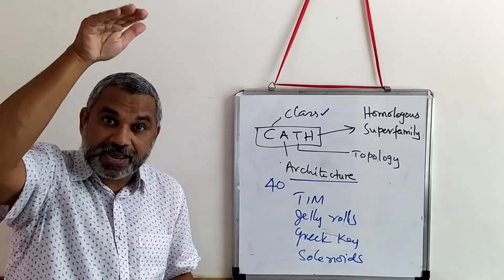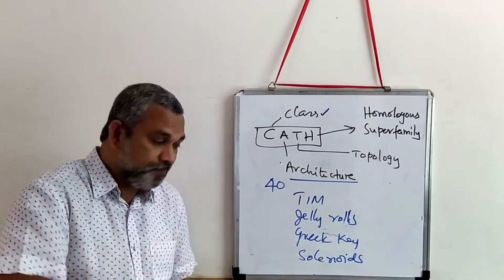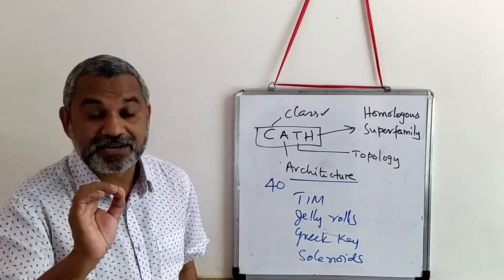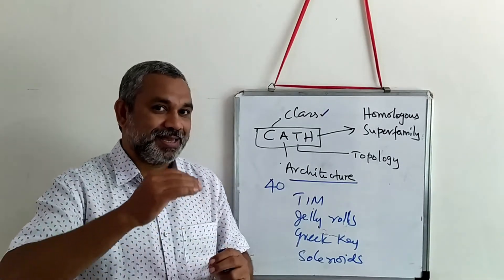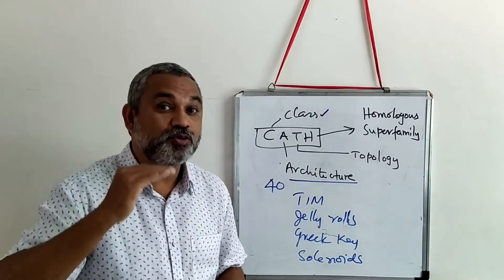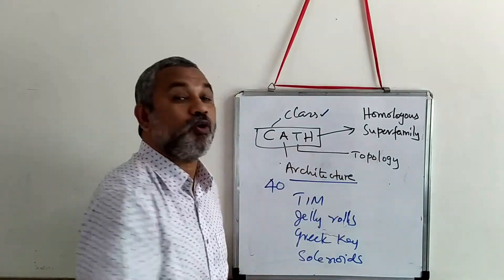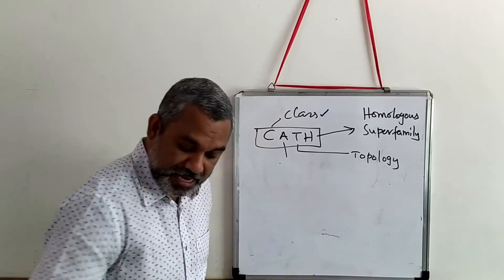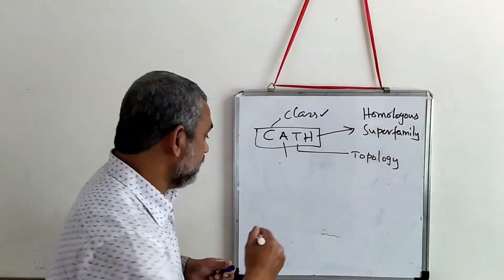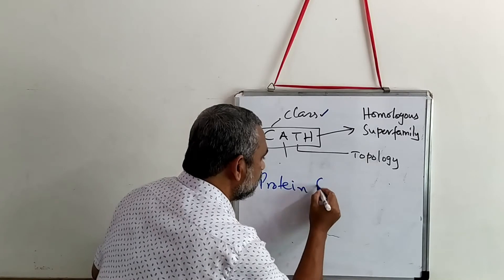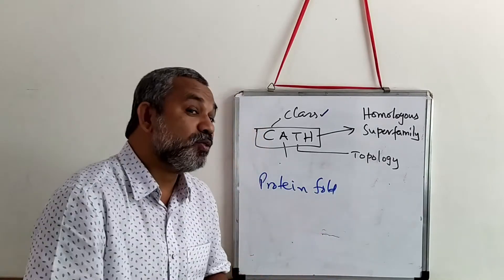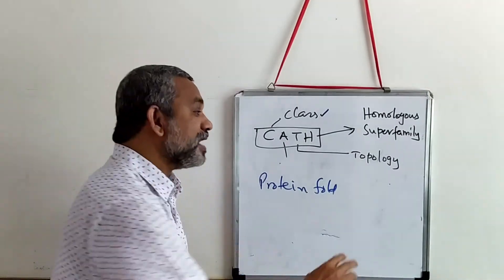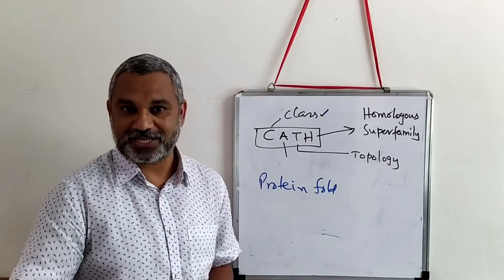Similarly, you will see that in the hierarchy it is coming lower and lower. So therefore there are 40 different types of architectures identified. In the third category in the classification according to CATH is the Topology. Topology means protein fold — all those similar folds are grouped together. That is what is done in topology, and this particular fold will be retained in different species.